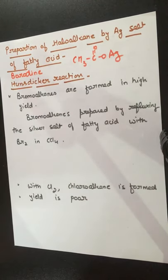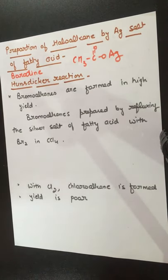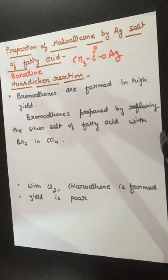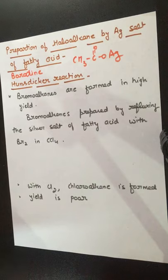In the Borodine-Hundsticker reaction, it is specifically for the formation of bromoalkane. You have to remember it is specifically for the formation of bromoalkane. By this reaction we can prepare both bromoalkane and chloroalkane, but bromoalkane yield is too good and chloroalkane yield is too poor. That's why by this method we actually prepare bromoalkane, because the yield is good.